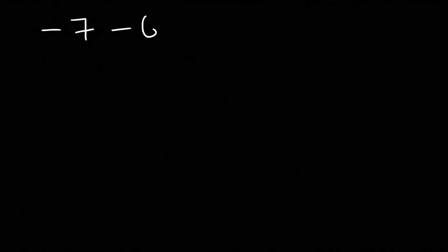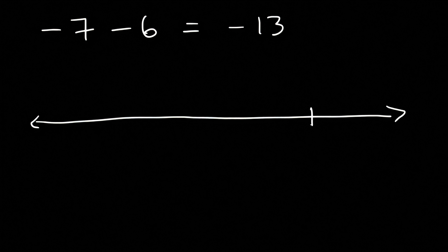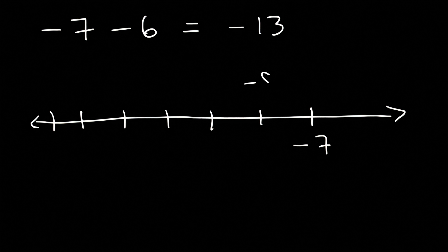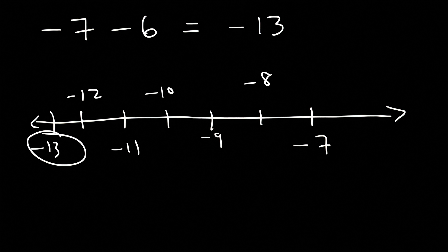Try this one: what is negative 7 minus 6? 7 plus 6 is 13, so this is going to be negative 13. Starting with negative 7 and traveling six units to the left gives us the same result.